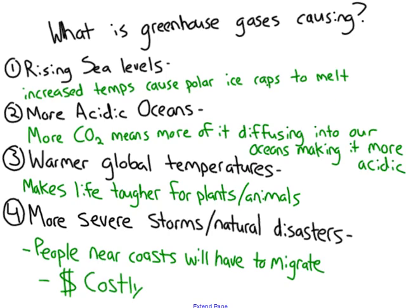The problems this causes — and these are not ranked in severity — include rising sea levels. There are cities that are starting to get flooded constantly because warmer temperatures are causing ice caps to melt, raising sea levels. Another problem is more acidic oceans — more CO2 in our atmosphere means more CO2 dissolving into the ocean, making it more acidic. More acidic water makes it harder for marine life; sea anemones and coral reefs are actually dying at a very fast rate.